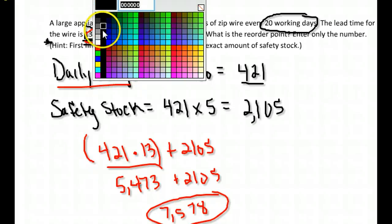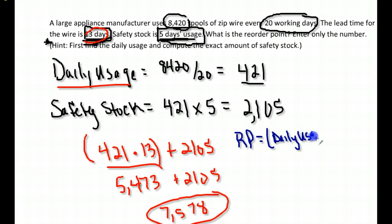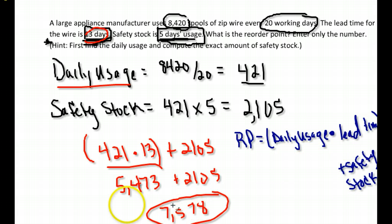If you don't have that formula written down yet, please do so: the reorder point is the daily usage times the lead time, plus safety stock. That's how we figure out the reorder point for a store.